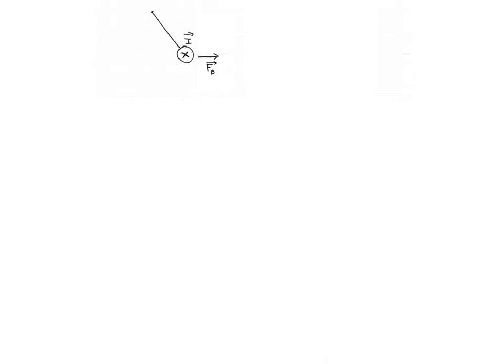Gravity will point down, the tension force in the string will point in the upper left hand corner, and that means that the magnetic force must point to the right if we want the rod to hang without moving.